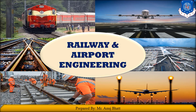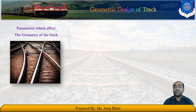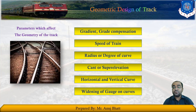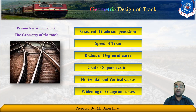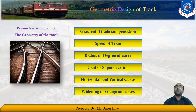With today's lecture we will start discussing the geometric design of the track. There are a few parameters which affect the geometry of the track: gradient or grade compensation, speed of train, radius or degree of curve, cant or super elevation, horizontal and vertical curves, and widening of gauge on curves. These are the major factors which affect the geometric design of the track.